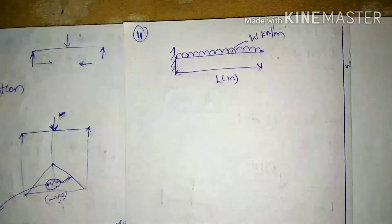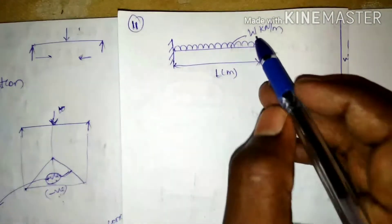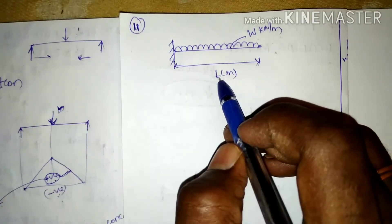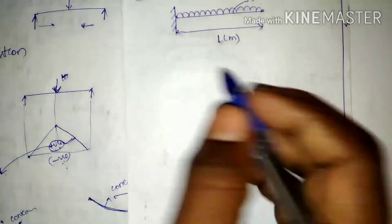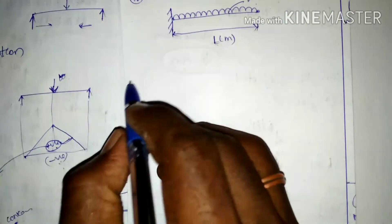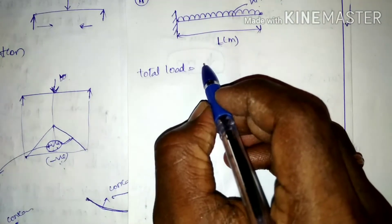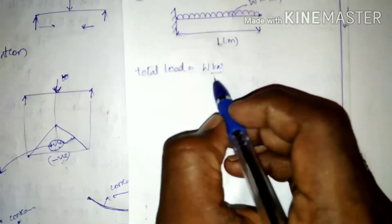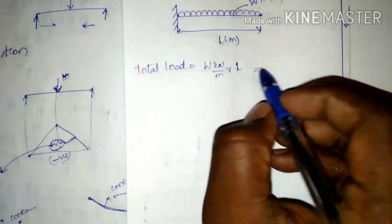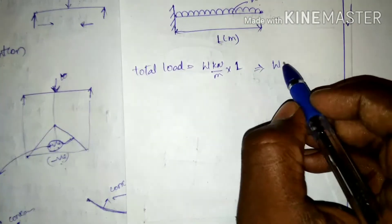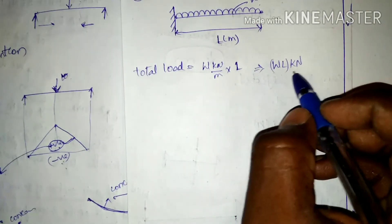Consider a cantilever beam with a whole span UDL of W kilonewtons per meter and span L meters. The total load on the beam is equal to W multiplied by L, giving WL kilonewtons.